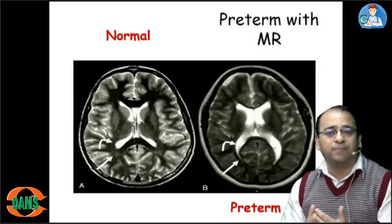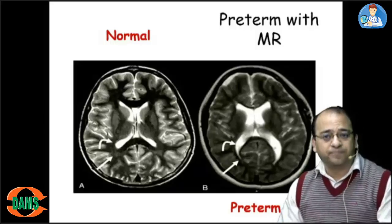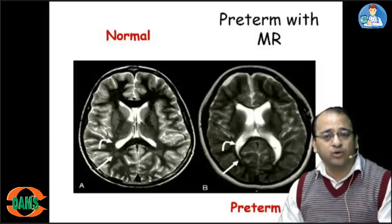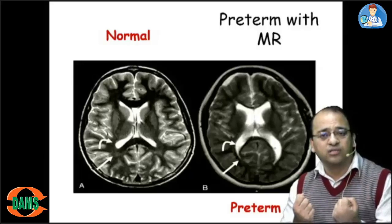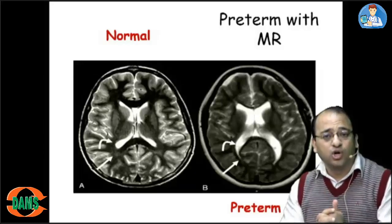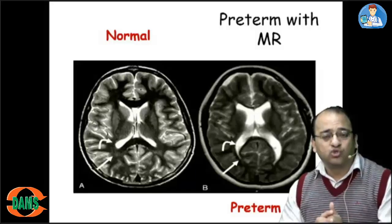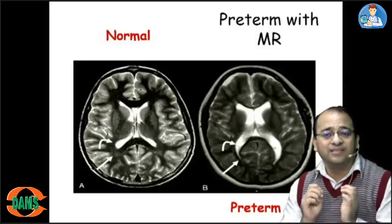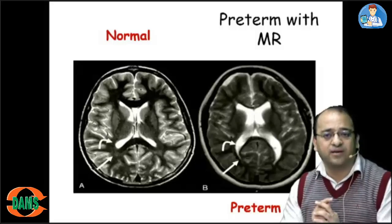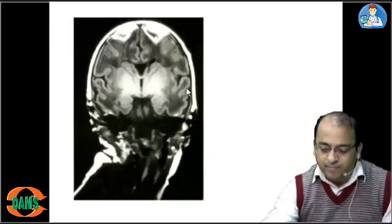Later in life, these preterm babies get a spastic diplegia type of cerebral palsy. In spastic diplegia, the upper limbs are strong and the lower limbs are weak, with increased tone in the lower limbs. This question came in NEET PG 2019. Remember: scissoring gait is seen in spastic cerebral palsy.